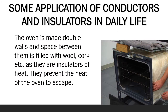We use ovens to cook food quickly. The oven is made with double walls, and the space between the walls of the oven is filled with wool or cork, which are insulators of heat. Thus, they help to trap the heat inside the oven.